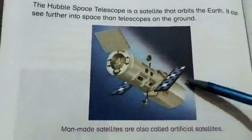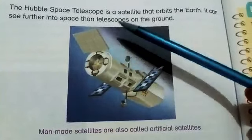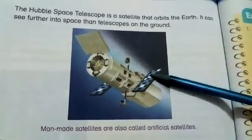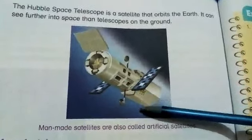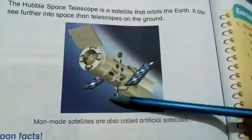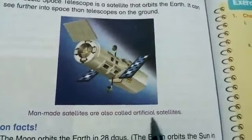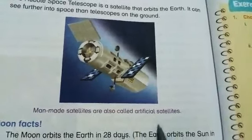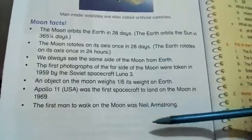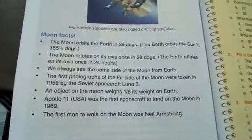Now, come to page 100. Look at this telescope — do you know which one it is? This is the Hubble Space Telescope, a telescopic satellite which is orbiting the Earth. It is different from other telescopes because it is located in space and orbiting the Earth, not on the ground. These are called man-made satellites. Now students, you have to read these amazing moon facts.